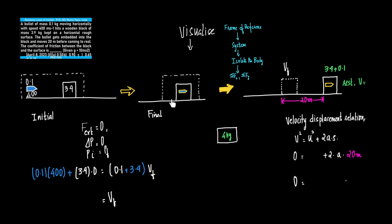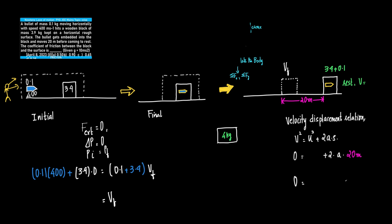We'll visualize this process. We'll choose an inertial frame of reference and visualize things from outside the frame. We will isolate the body and then apply sigma of x and sigma of y.